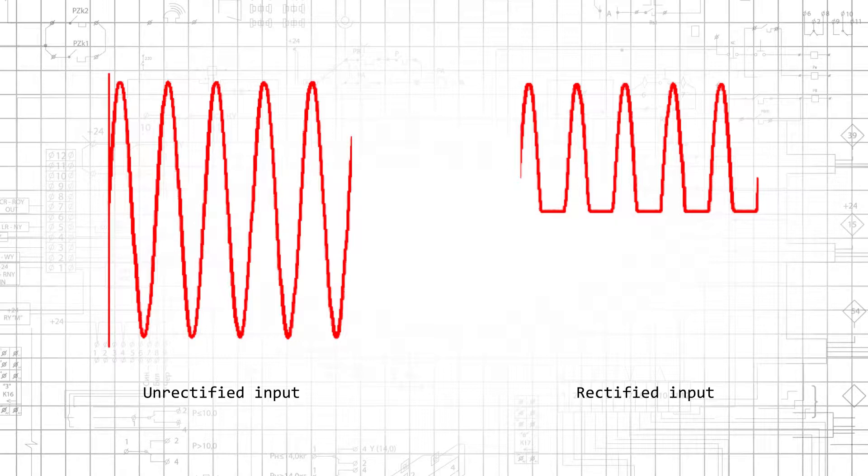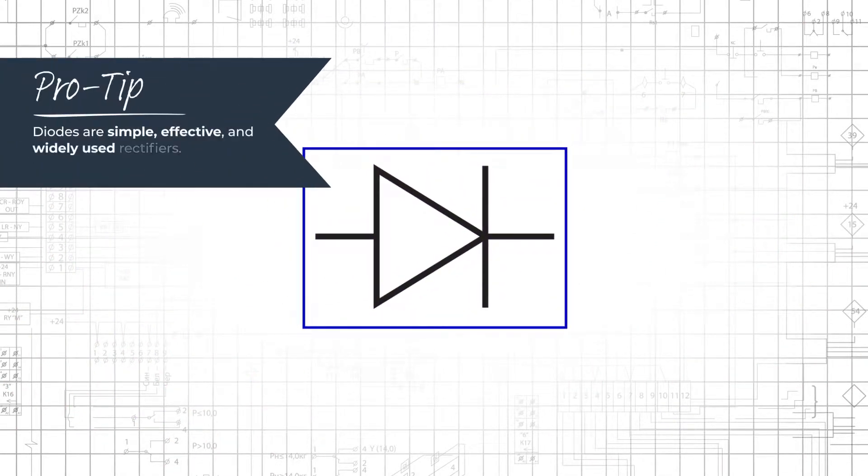The most basic rectification circuit is simply a diode. Diodes are simple and effective rectifiers, and they are widely used for this purpose.